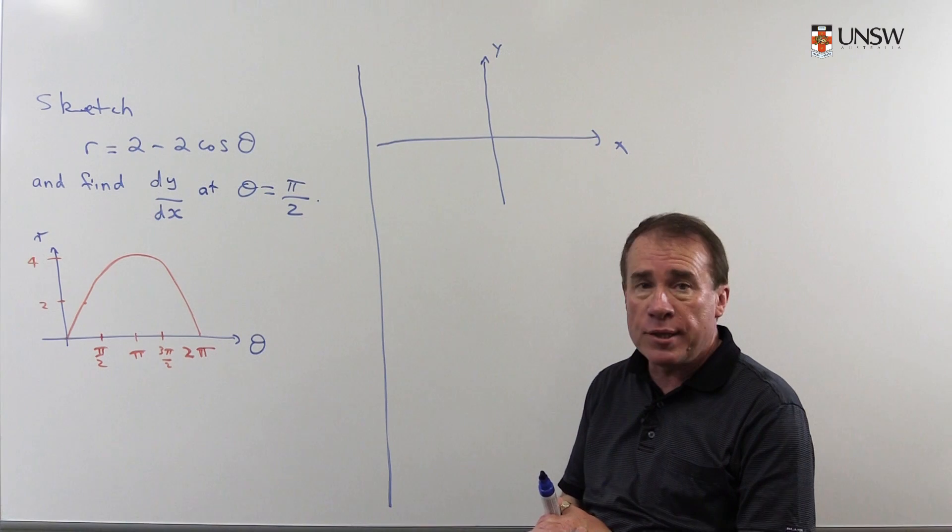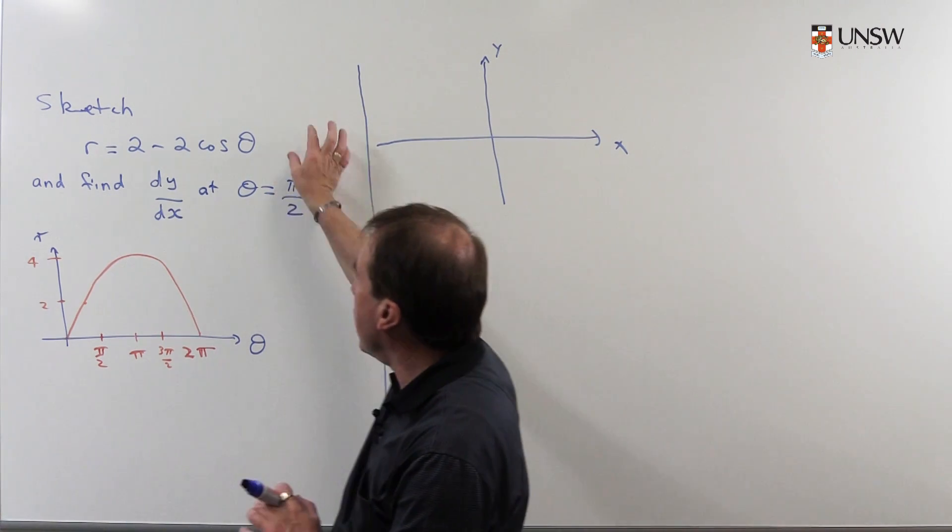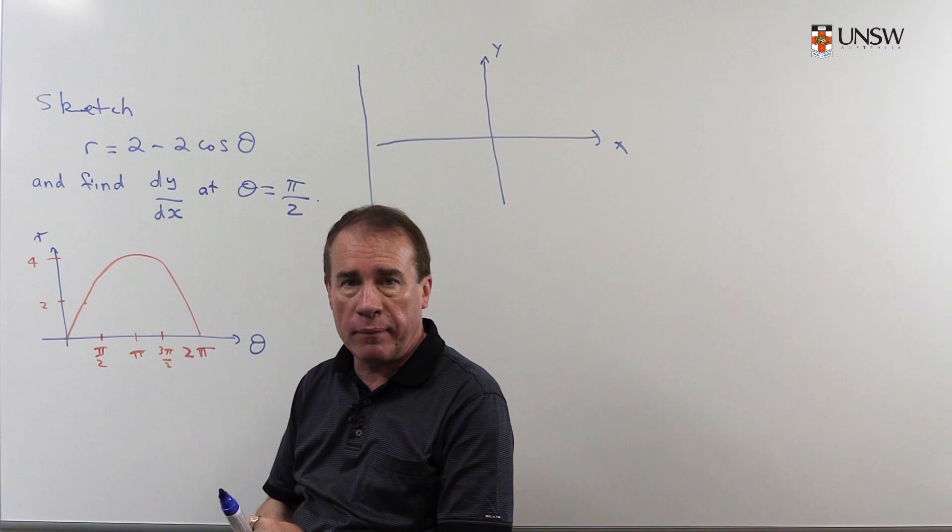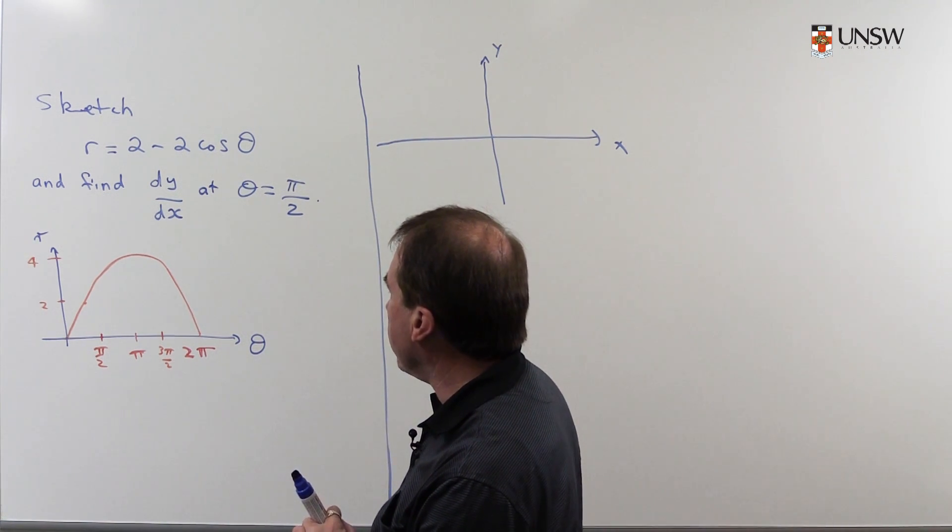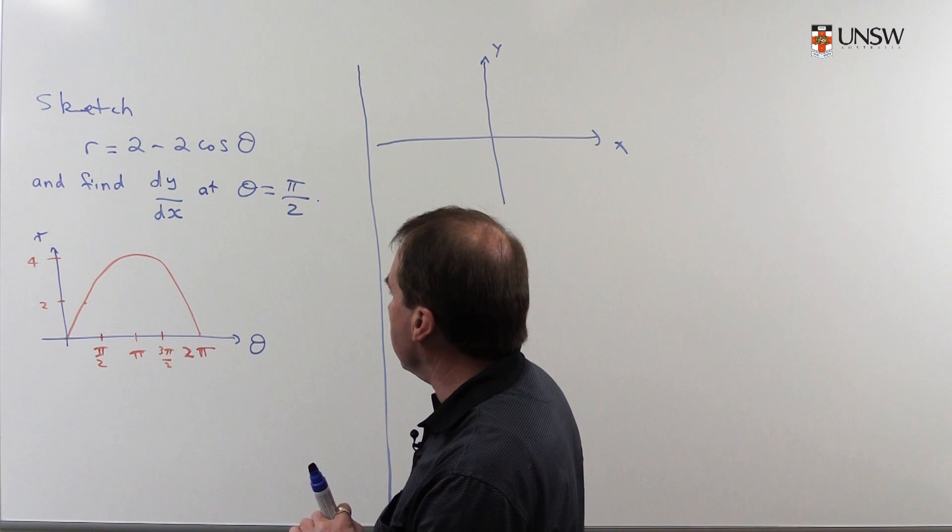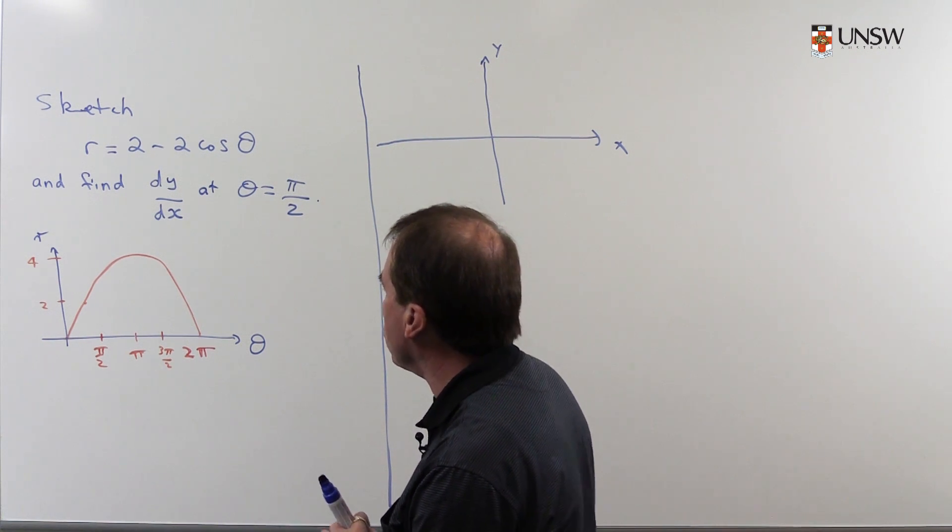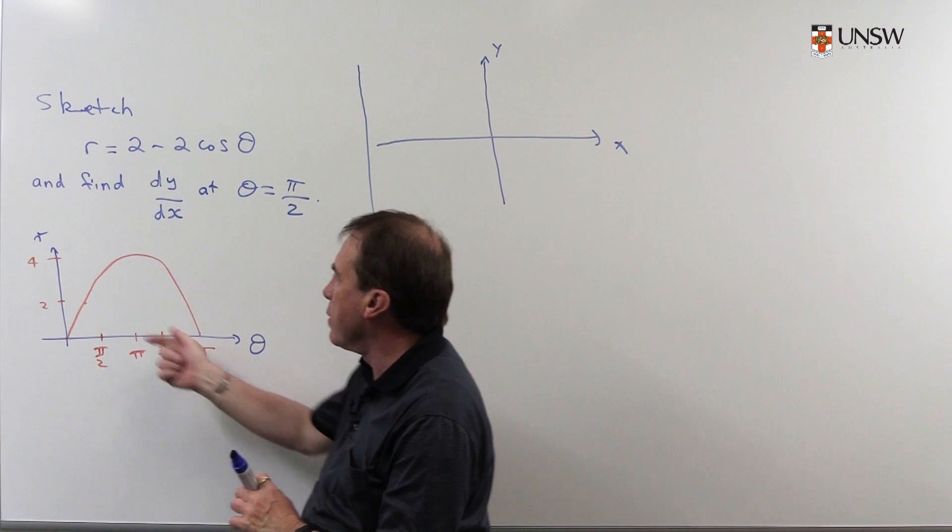Now there are many ways people do this. Some people make up a table of values of r and θ, and that's okay. I like to give a rough sketch of what this looks like firstly in the r-θ plane.